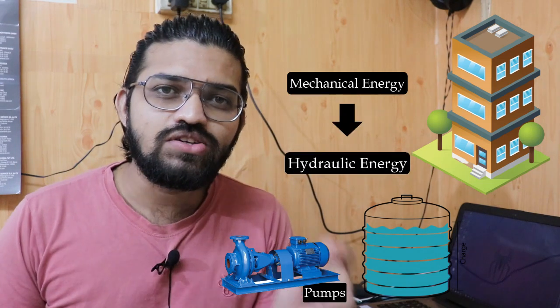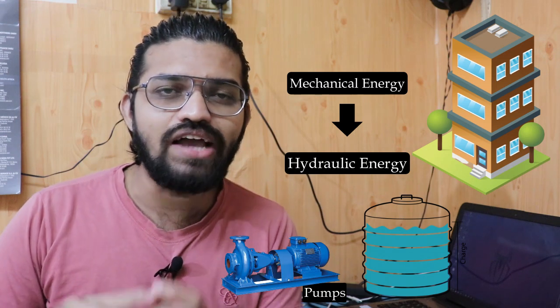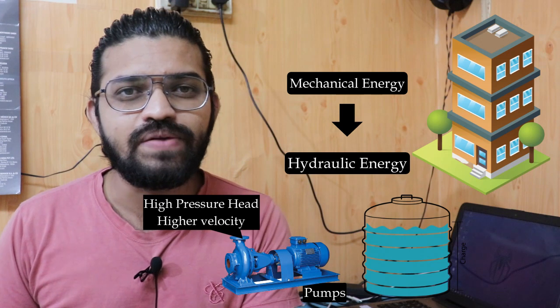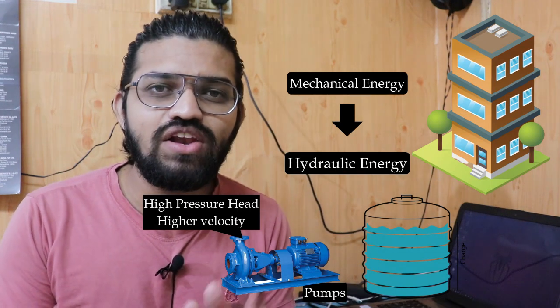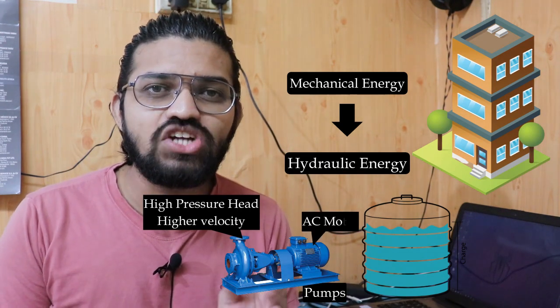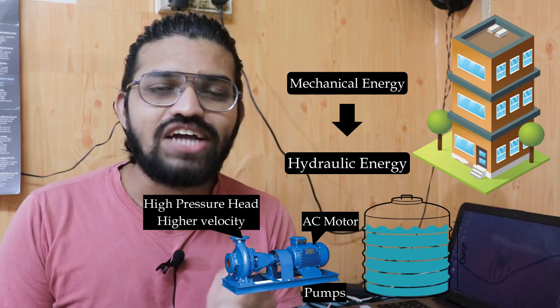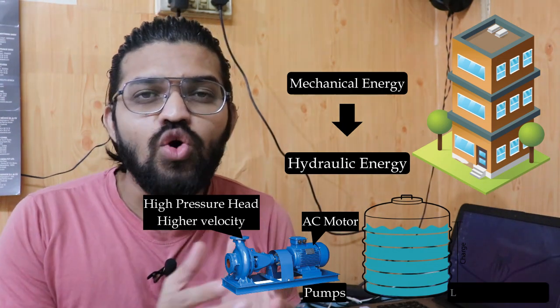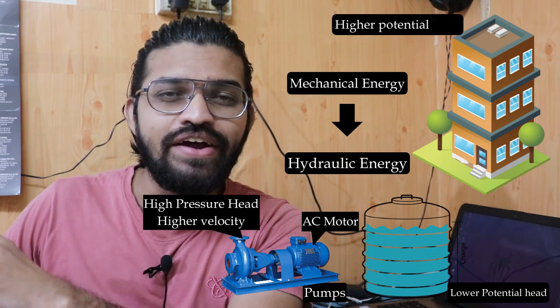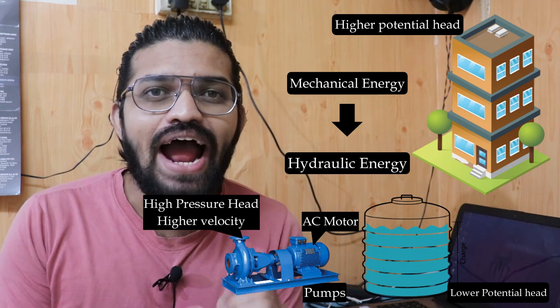Pumps are the reciprocal of hydraulic turbines. In hydraulic turbines, hydraulic energy gets converted into mechanical energy. In the case of pumps, mechanical energy gets converted into hydraulic energy such that at the exit of the pump we get higher pressure head and higher velocity. Pumps are mechanical devices that consume electricity or mechanical energy and, through rotation or compression, allow fluid to pass from a lower potential head to a higher potential head with higher velocity and higher pressure.